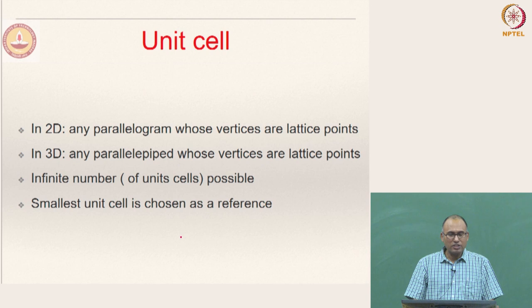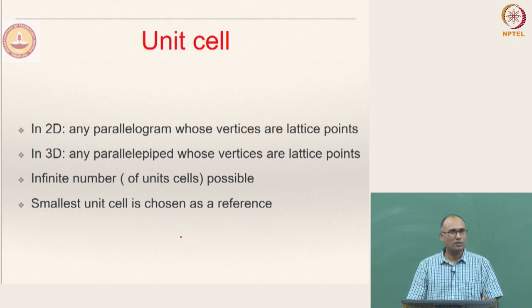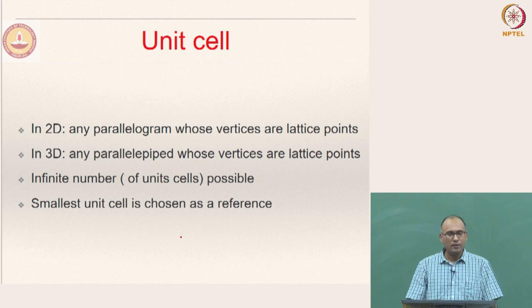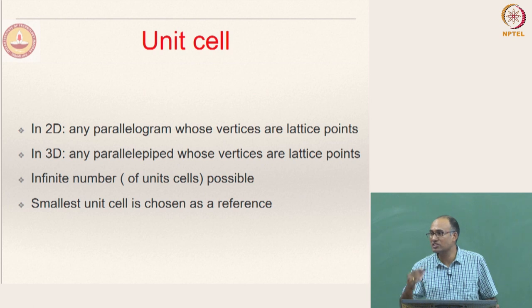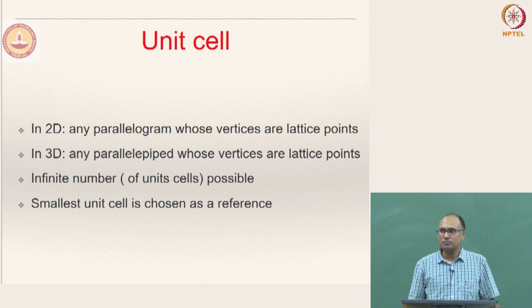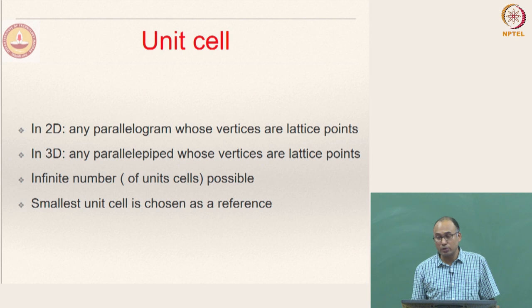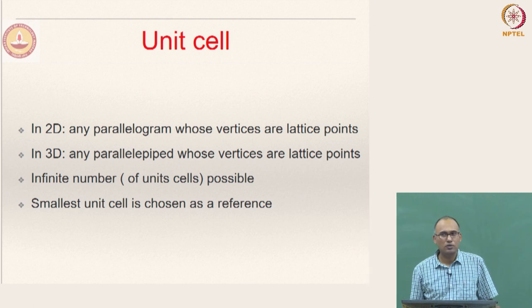In summary: in 2D, a unit cell is any parallelogram whose vertices are lattice points; in 3D it is a parallelepiped. In principle you can have infinite possibilities for unit cells in 2D and 3D. Now, how many kinds of unit cells can you generate in 1D? And how many primitive unit cells can you define in 1D and in 2D? Think about it.